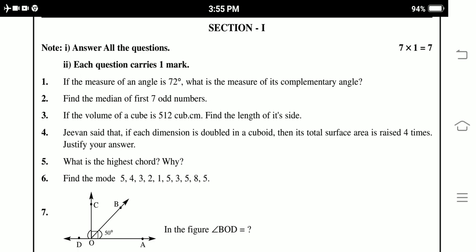If the volume of a cube is 512 cm³, find the length of its side. Jeevan says that if each dimension is doubled in a cuboid, then its total surface area is raised 4 times. Justify your answer.